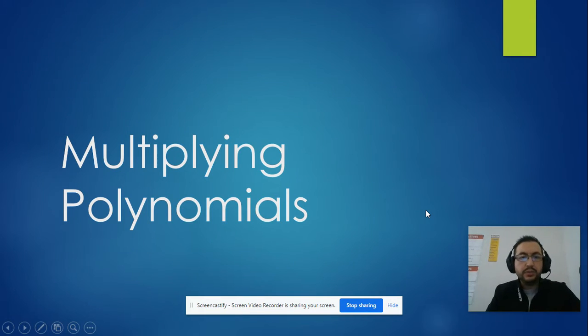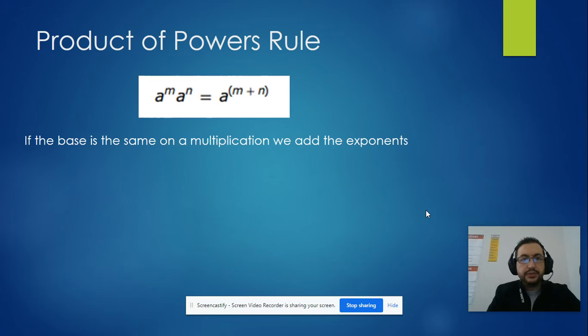Today we're going to learn about how to multiply polynomials. Let's see some examples. We're going to be using a lot of the product of power rules, like multiplying one monomial times another binomial. But now we're going to do a distribution. Let's do a review of the product of powers. When we multiply exponents, we're going to add them.